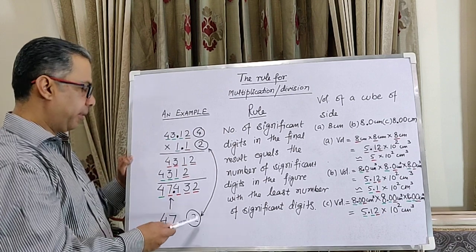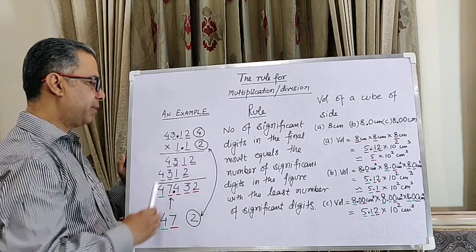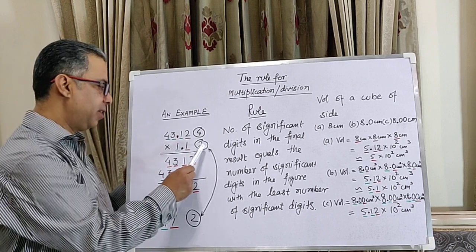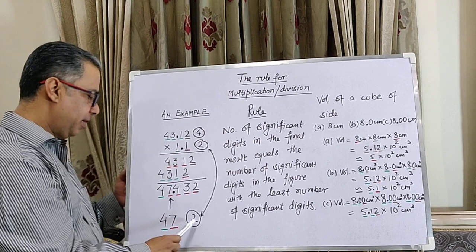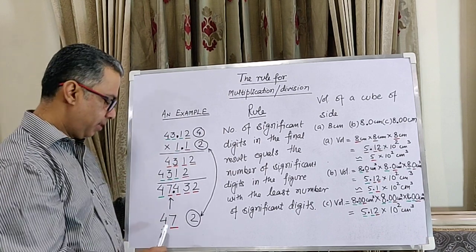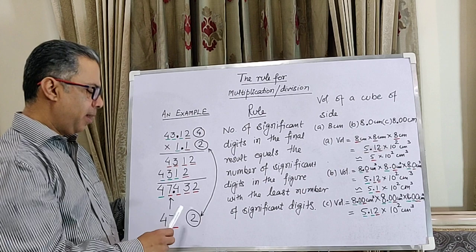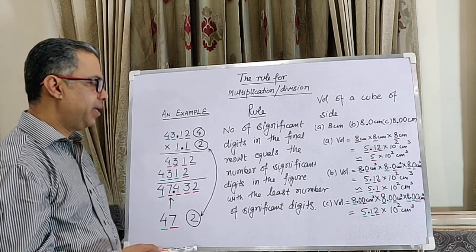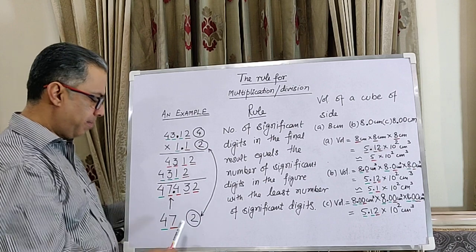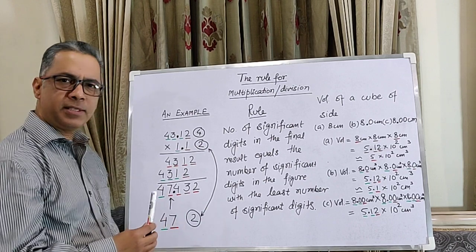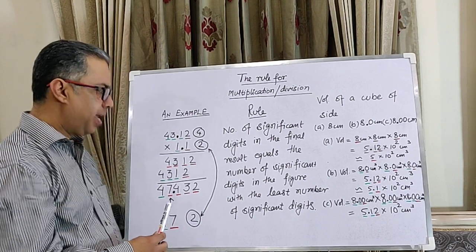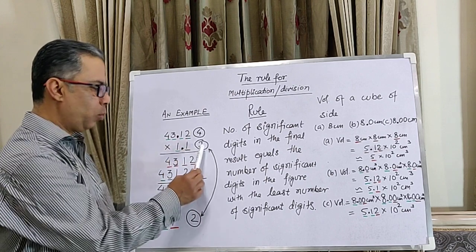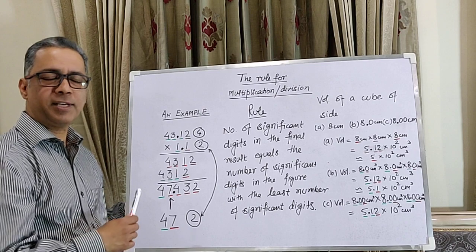Now have a look. This had four significant digits, this had two significant digits, and the final result has two significant digits. Therefore, the rule we arrive at is that the final result must have as many significant digits as there are in the input number with the least number of significant digits.